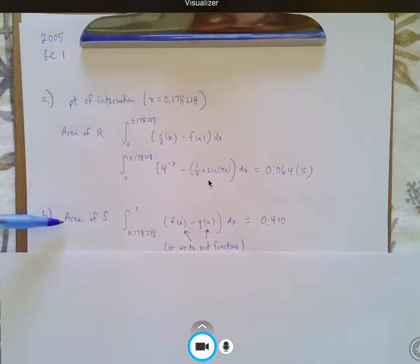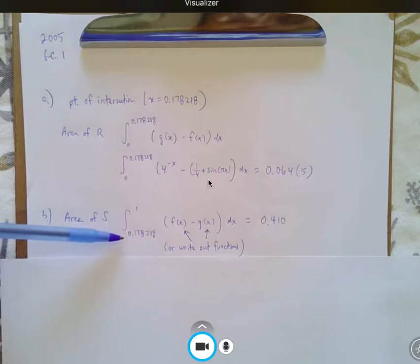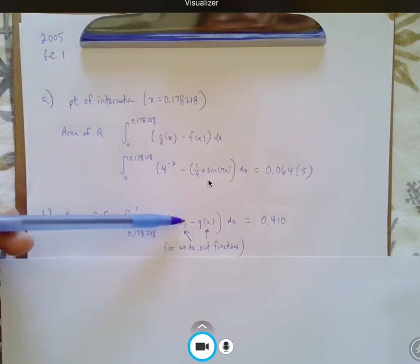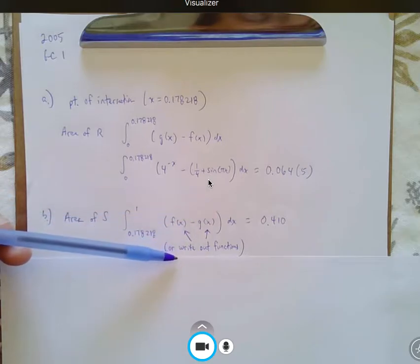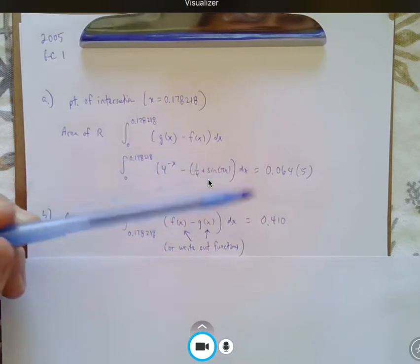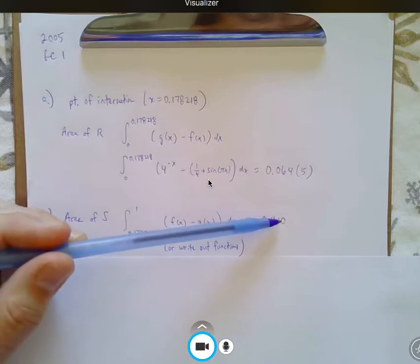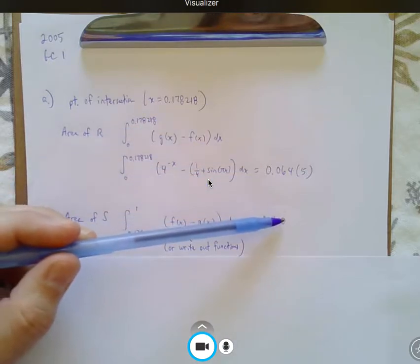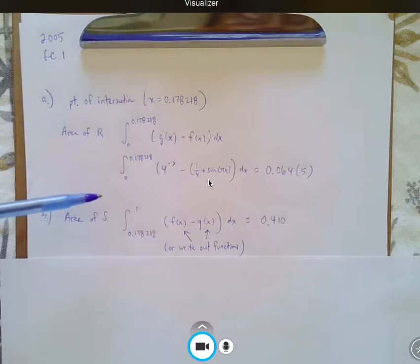Letter B, the area of S, again, the point of intersection is now the lower limit, the irrational number. Again, you can write out f of x minus g of x or the actual functions. And again, practice writing this out, and you get 0.410. Don't forget the 0. If it's a third number, then that's what it is. So, don't write 0.41, write 0.410.